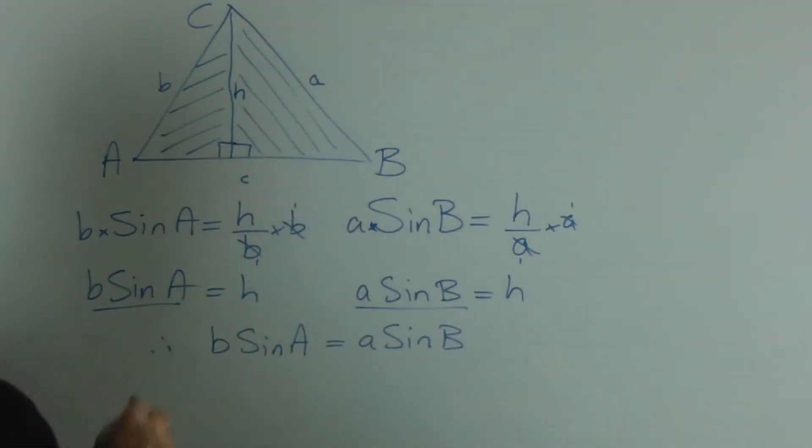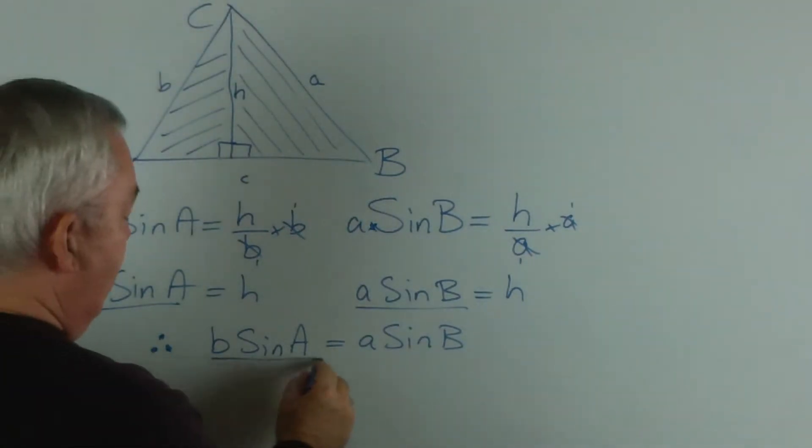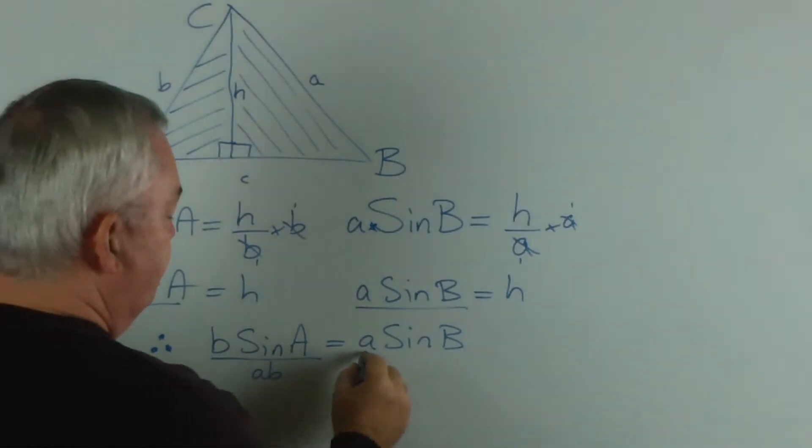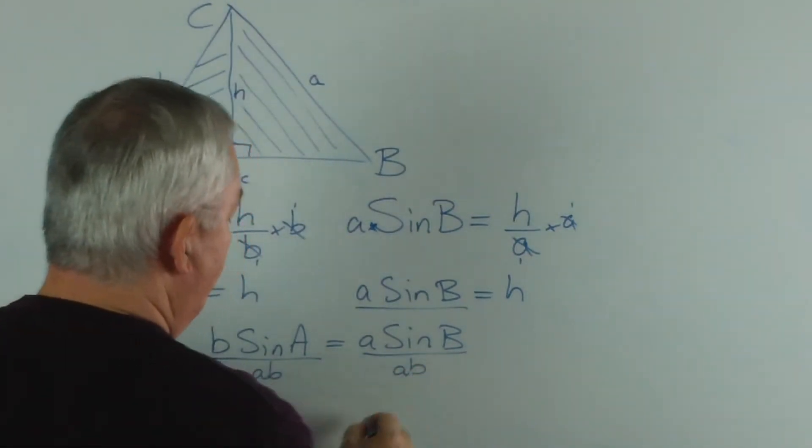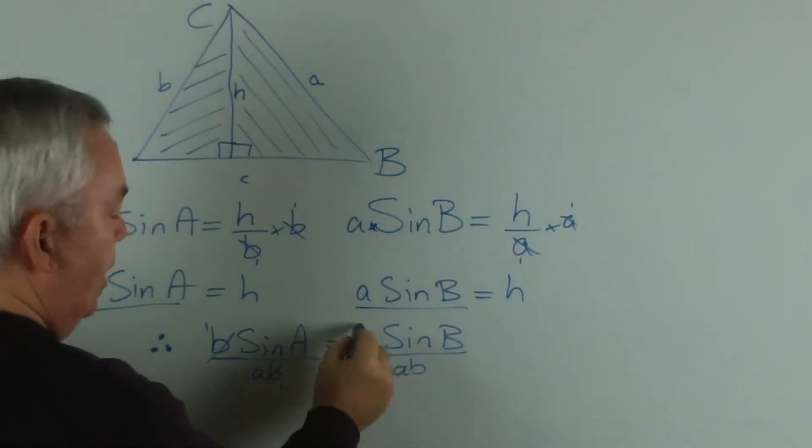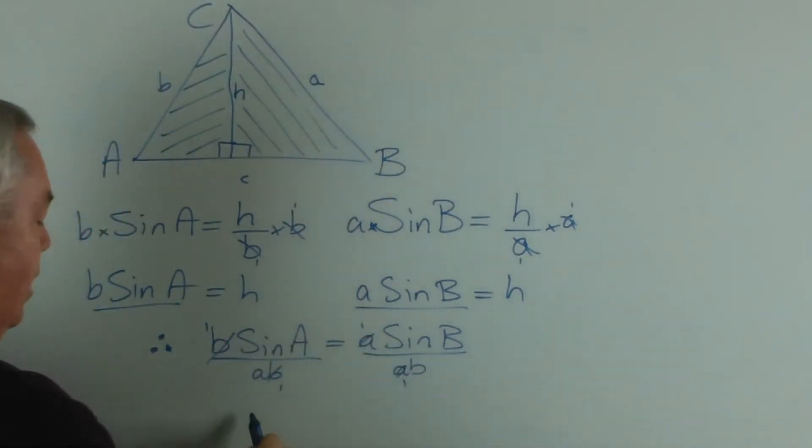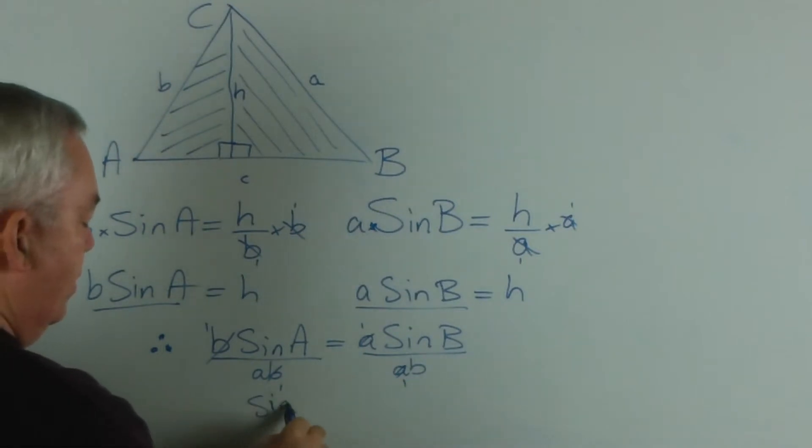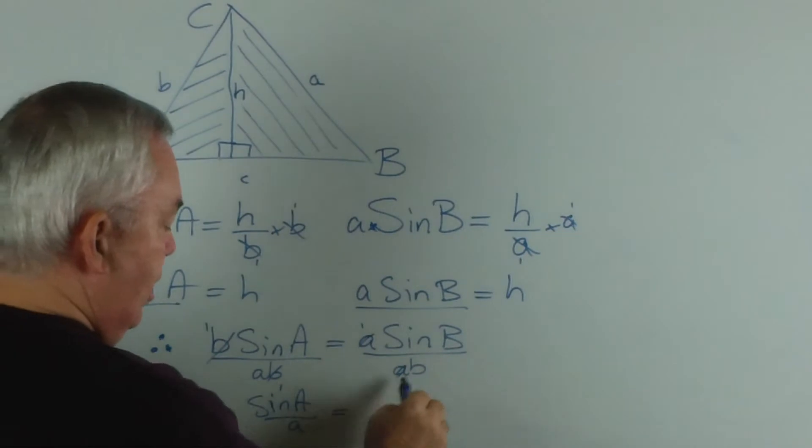I'll even write therefore. And to finish off, I'll divide both sides by ab. b will divide out the b, the a will divide out the a, and I have sin A over a equals sin B over b.